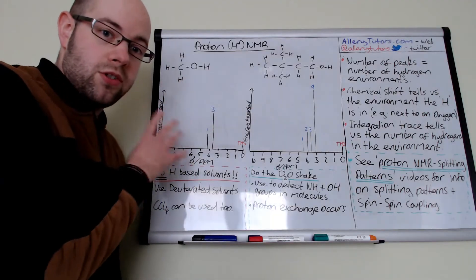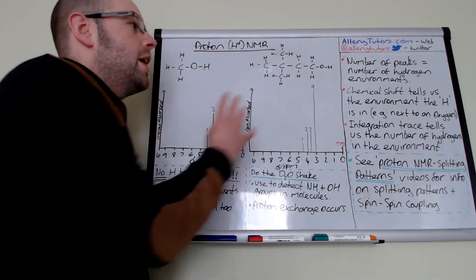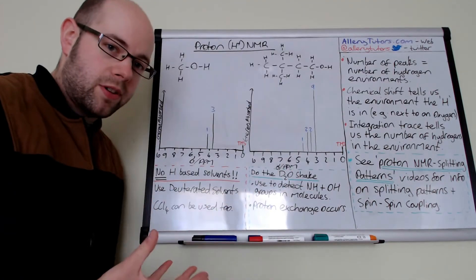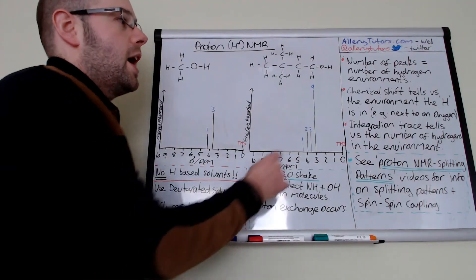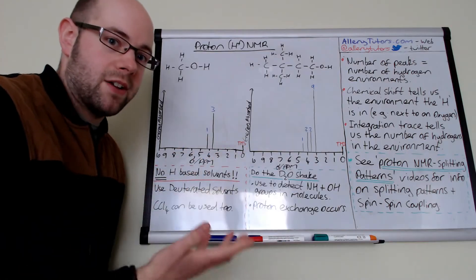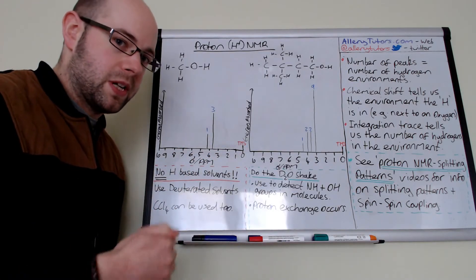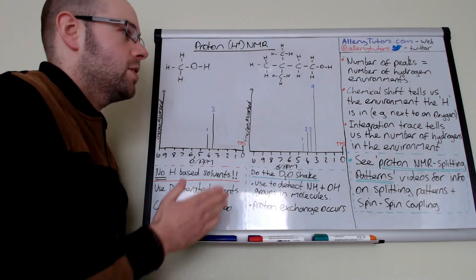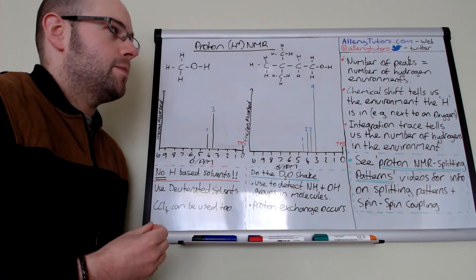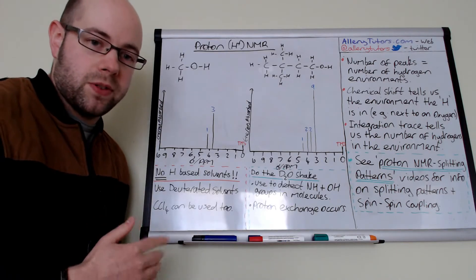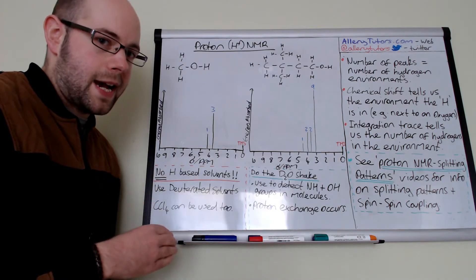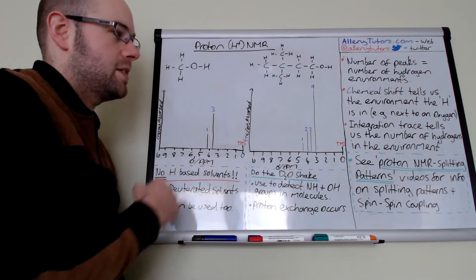We're going to look at something called chemical shift, just like in carbon-13 NMR. This tells us the type of hydrogen and what environment the hydrogen is in — for example, if there's a bond next to an oxygen or a nitrogen. You'll get a table in your exam that shows you the chemical shifts for different functional groups in a molecule.